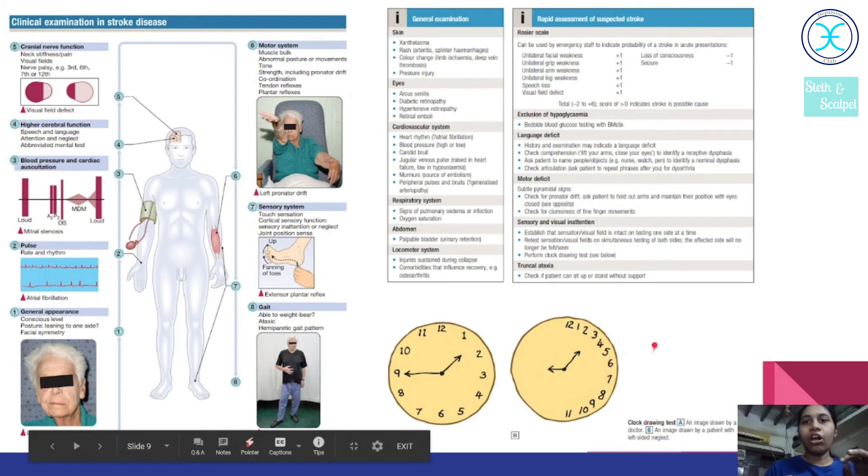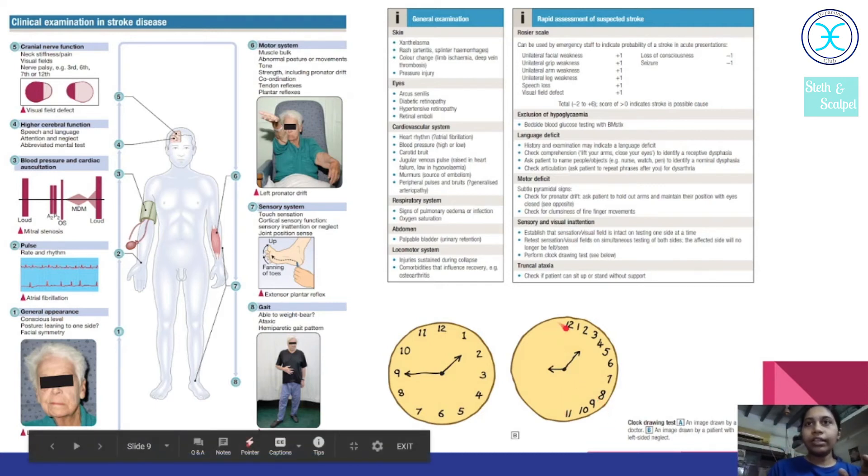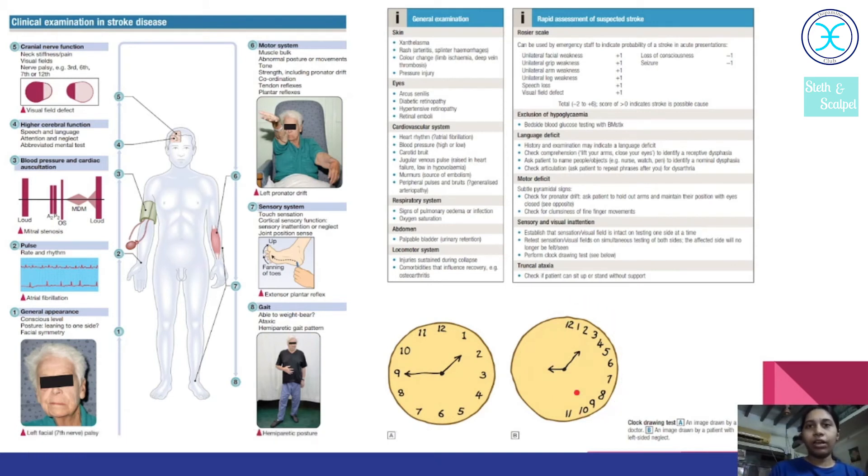See, this is a test called the clock drawing test. This tells us whether the patient has any hemineglect syndrome or not. Hemineglect mainly tells us whether the parietal cortex is involved or not. See, in this side, the left side, totally the patient has not written anything. It tells us that he has completely neglected the left side and has written only the timings of the clock on the right side, which is called hemineglect. It tells us the parietal cortex is involved in this patient.